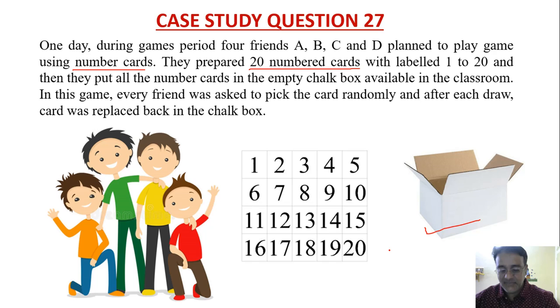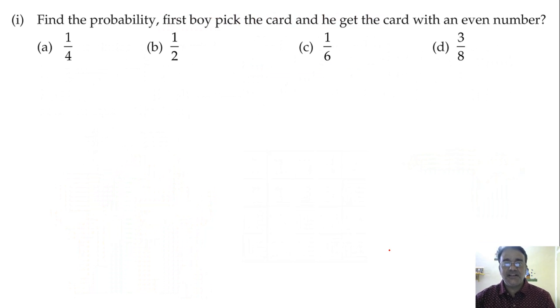Now based on this condition, some questions are framed. Let us start with the first: find the probability the first boy picked the card and he gets a card with an even number. So how many even numbers are there 1 to 20? 10.